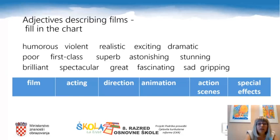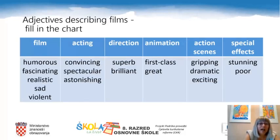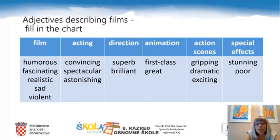Please, after having your chart drawn in your notebooks, fill it in with the words. Let's do the check-up now. I hope your charts look more or less like this one. So, we can say humorous, fascinating, realistic, sad, or violent film; convincing, spectacular, or astonishing acting; superb or brilliant direction; first-class or great animation; gripping, dramatic, or exciting action scenes; and stunning or poor special effects.